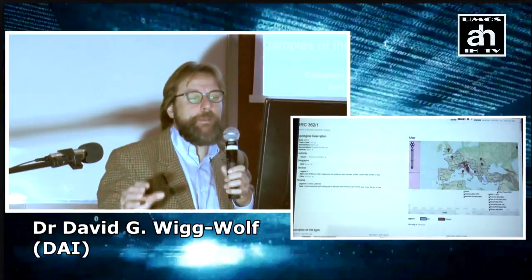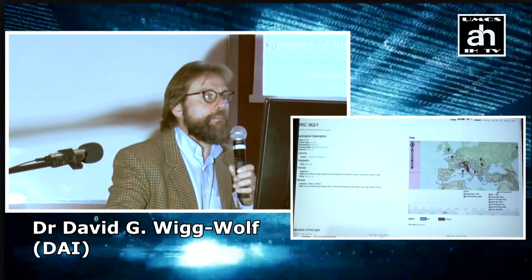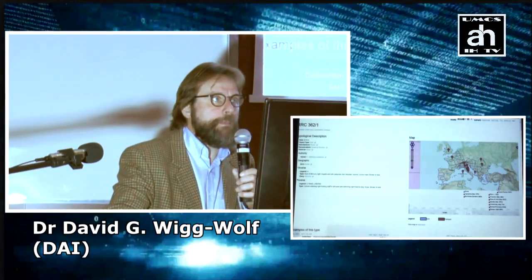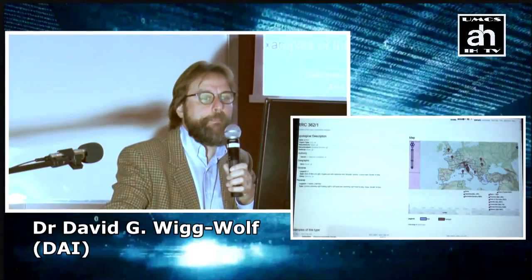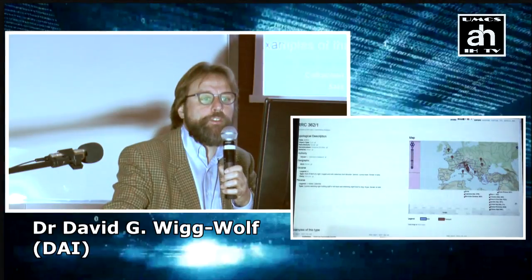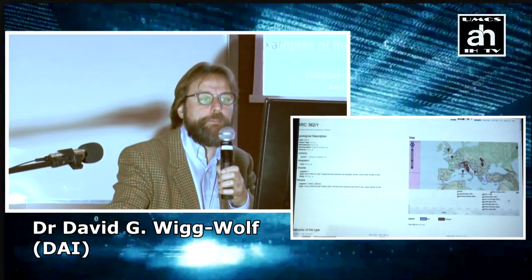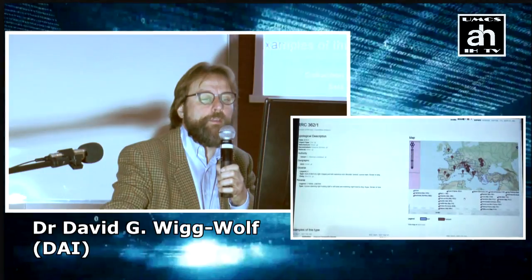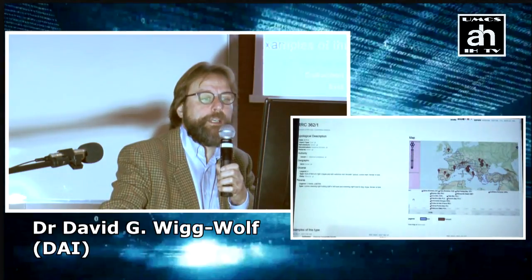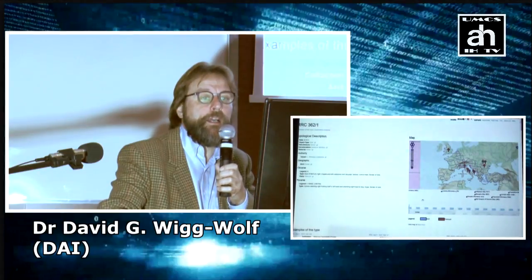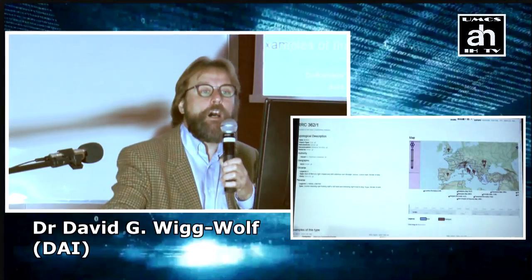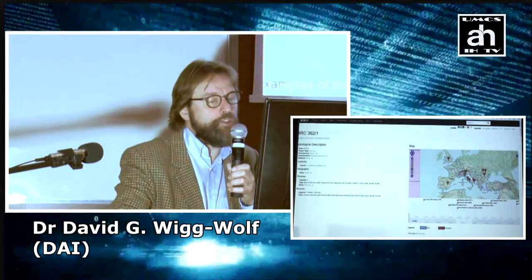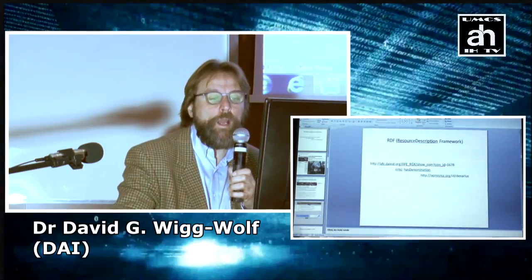We can then pull in resources from other websites. For example, there is a Nomisma-powered website of coin hoards containing coins of the Roman Republic. And I can then produce this wonderful timeline on the map on the right, which gives me the distribution of this coin in particular coin hoards going through the ages. So you can see what possibilities we have through this tool, Nomisma, of pulling together websites.